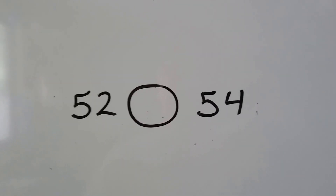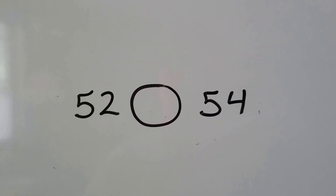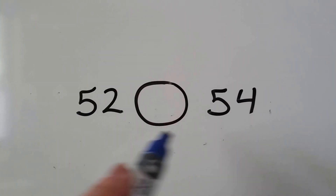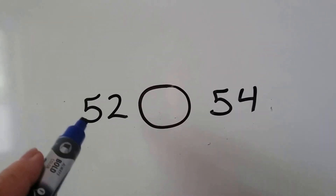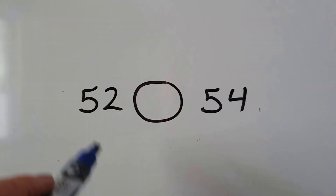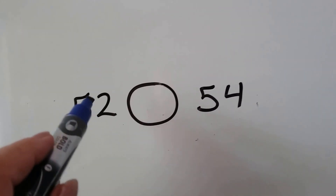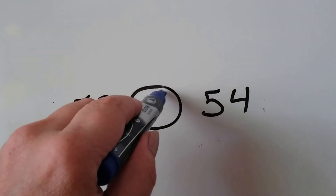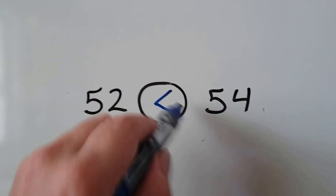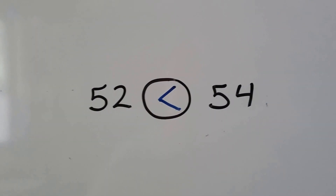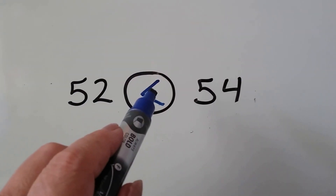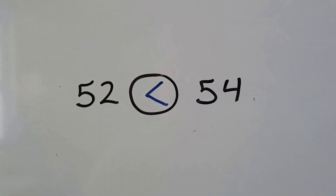Here we have 52 and 54. They both have the same number of tens — they both have five tens. But this has two ones and this has four ones. Big mouth eats big number. 52 is less than 54.